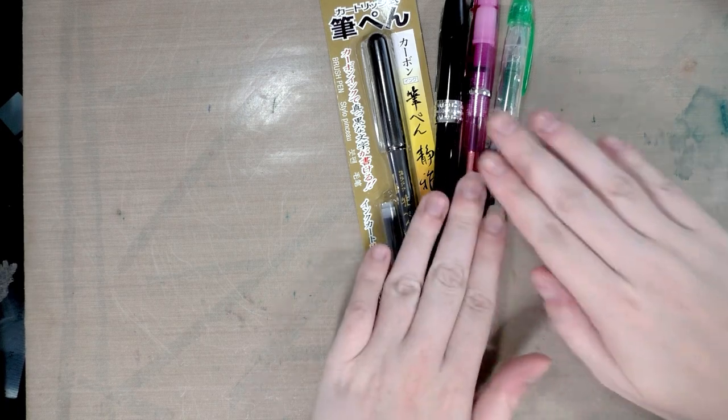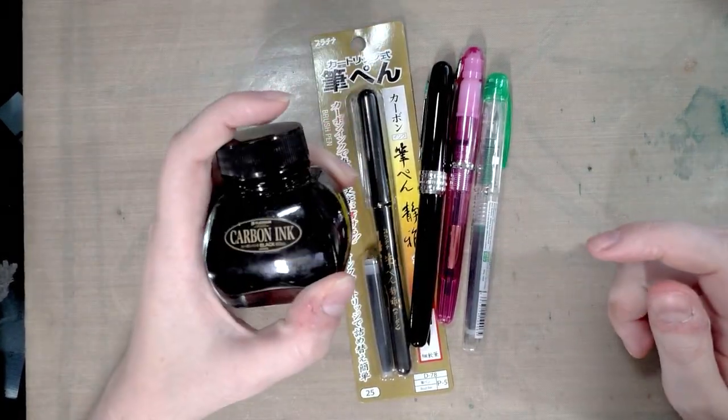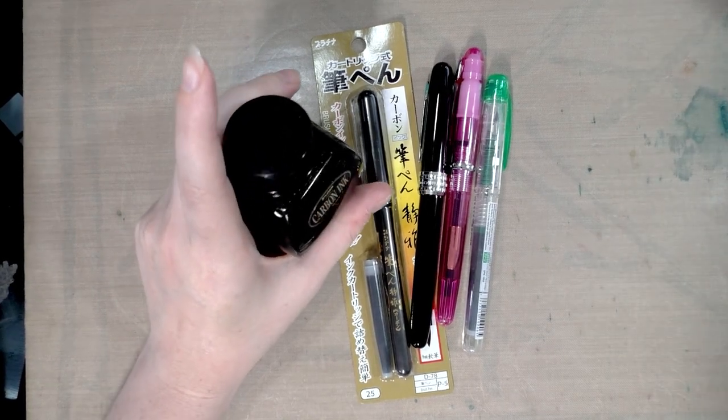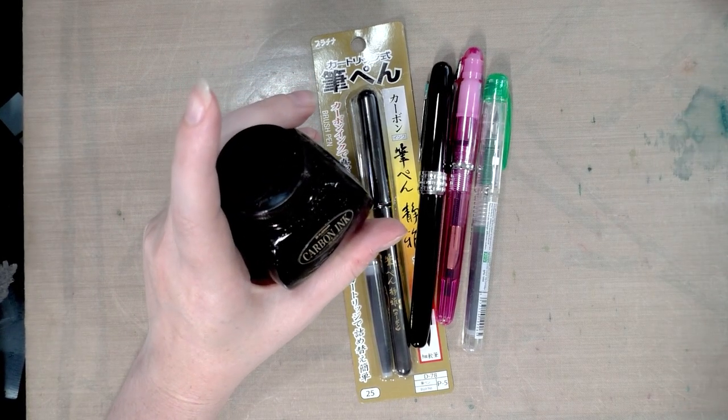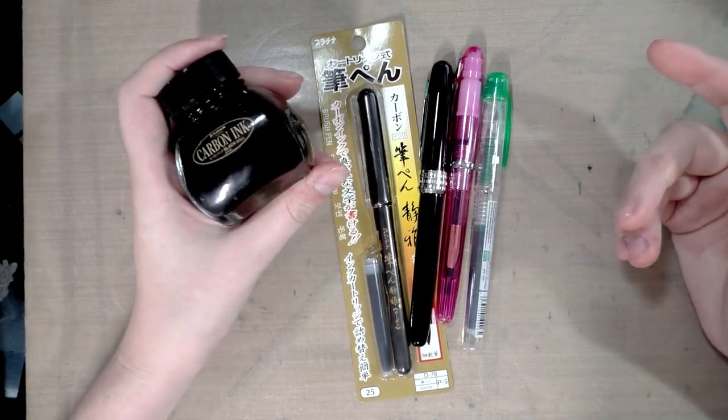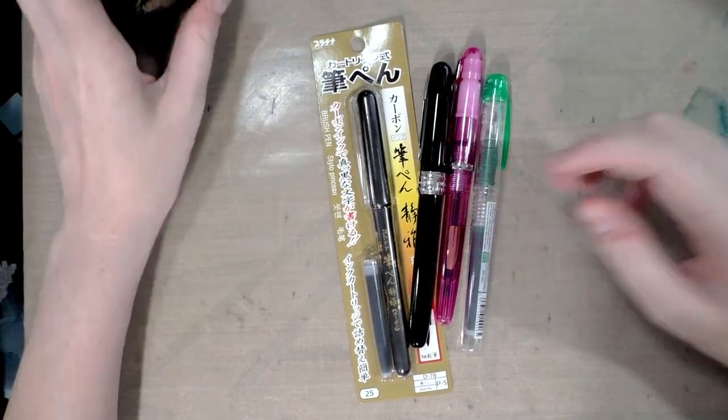So I have used quite a few Platinum fountain pens and I use their pigment based carbon ink, which is waterproof and this is a very fine carbon based ink which it won't clog fountain pens. So I assume it won't clog brush pens.